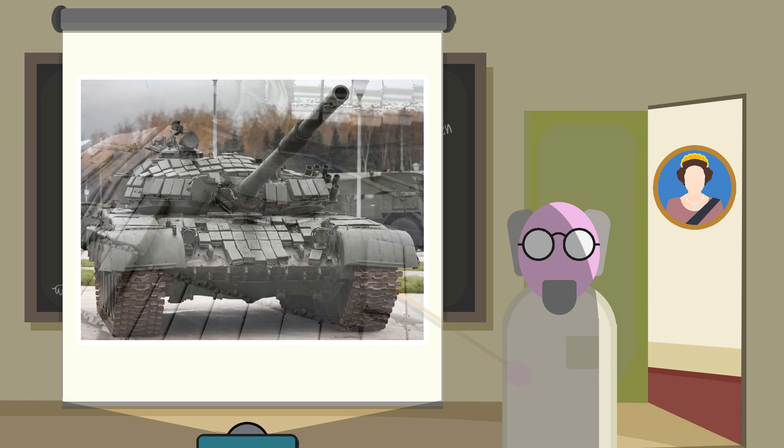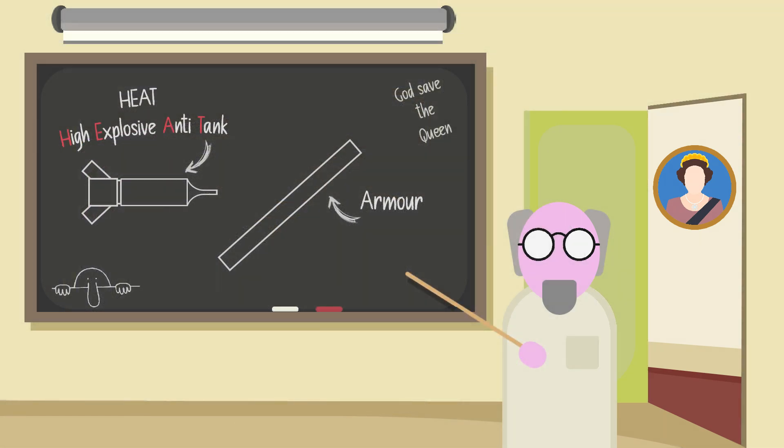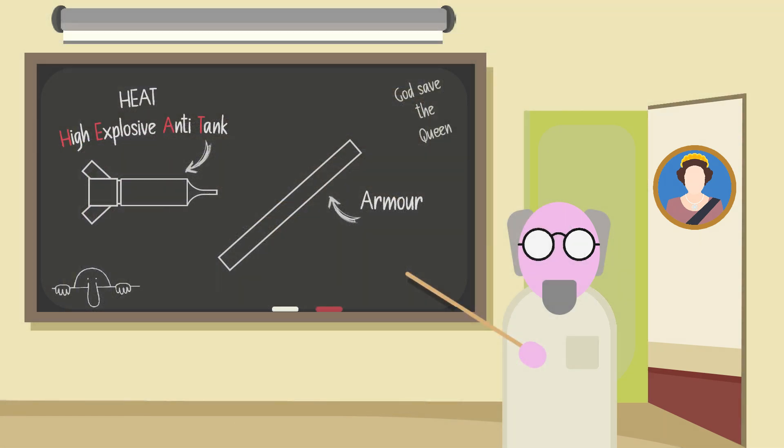ERA falls under the general catchment of reactive armors, which is any form of protection designed to prevent the penetration of the vehicle by reacting to a shot striking the device itself or in the immediate proximity of the strike. In some cases, its purpose is to disrupt, redirect, or absorb the energy of the round to prevent or weaken its strike on the tank's main armor.